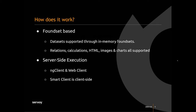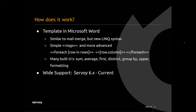So how does it work? It's foundset based. Data sets are supported through in-memory foundsets. Relations, calculations, HTML, images, and charts are all supported. It will get executed server side on the NG client and web client, and on the smart client it will get executed client side. Templates are in Microsoft Word, similar to mail merge but a bit simpler — you don't have to add all the fields, you just use less than and greater than tags for the link syntax. There are also more advanced options like looping and lots of built-in functions, with good documentation on what's available. Support-wise, it's available from Servoy six to the current version.